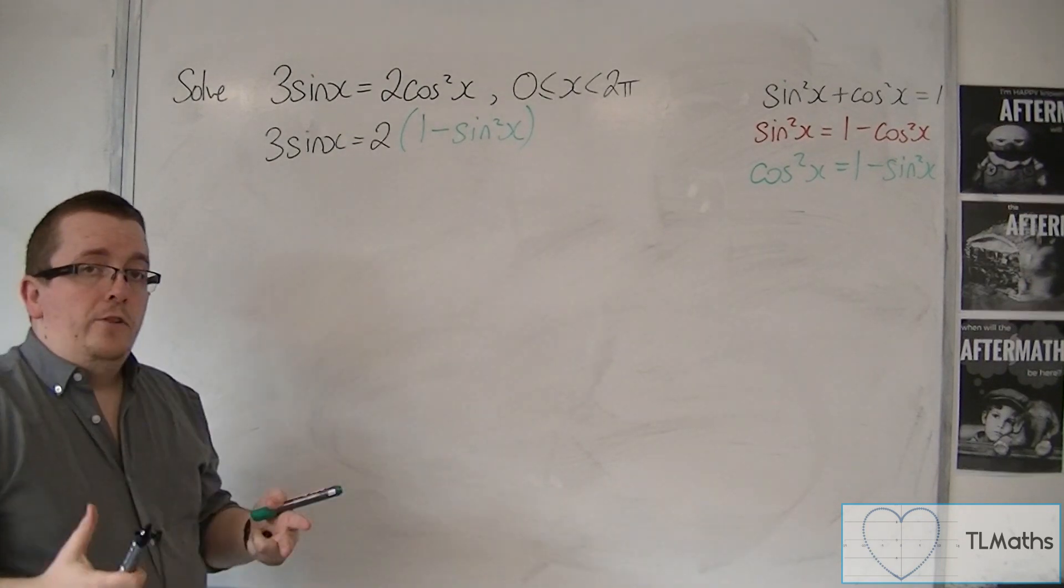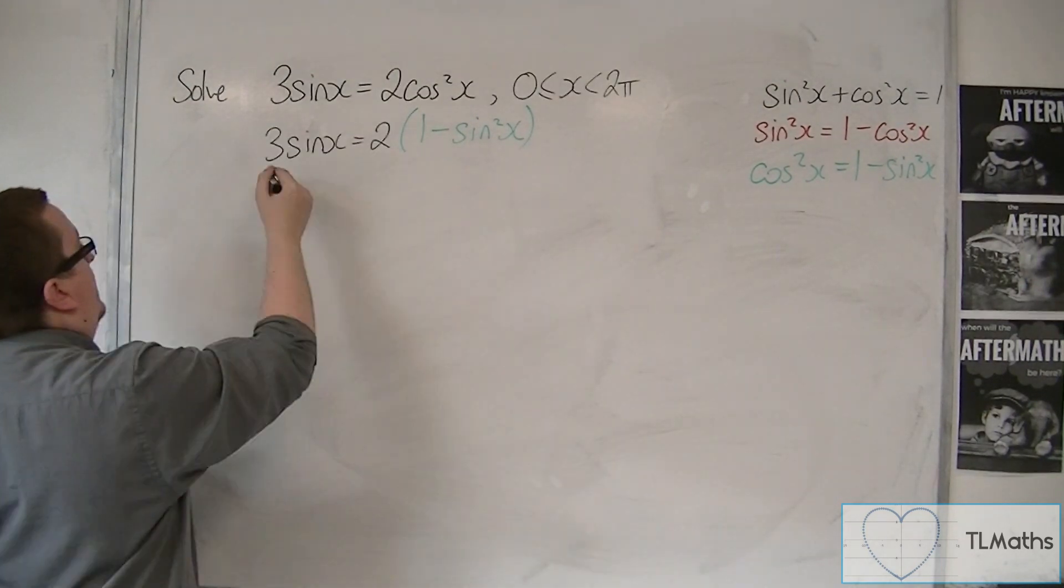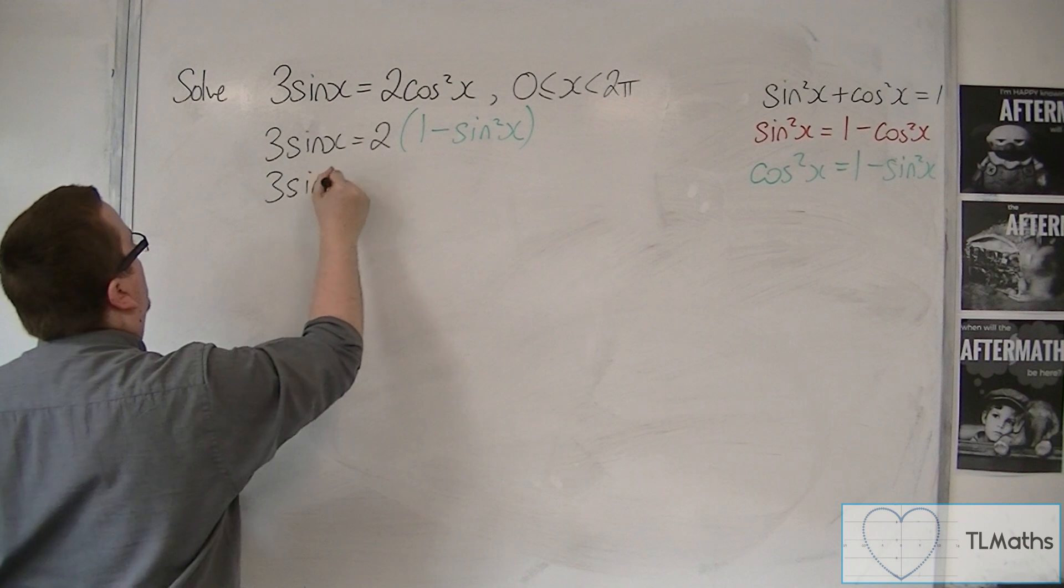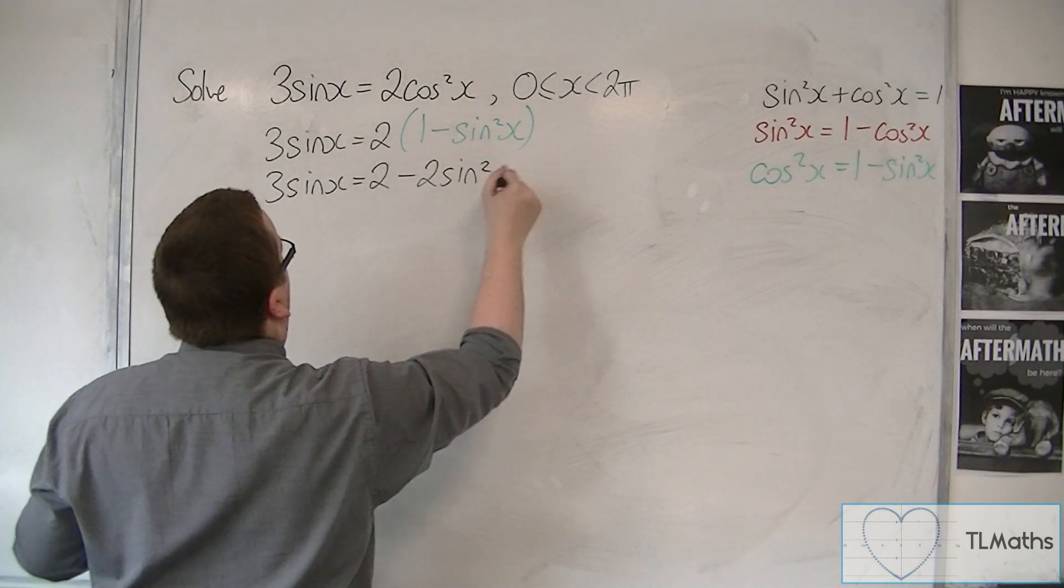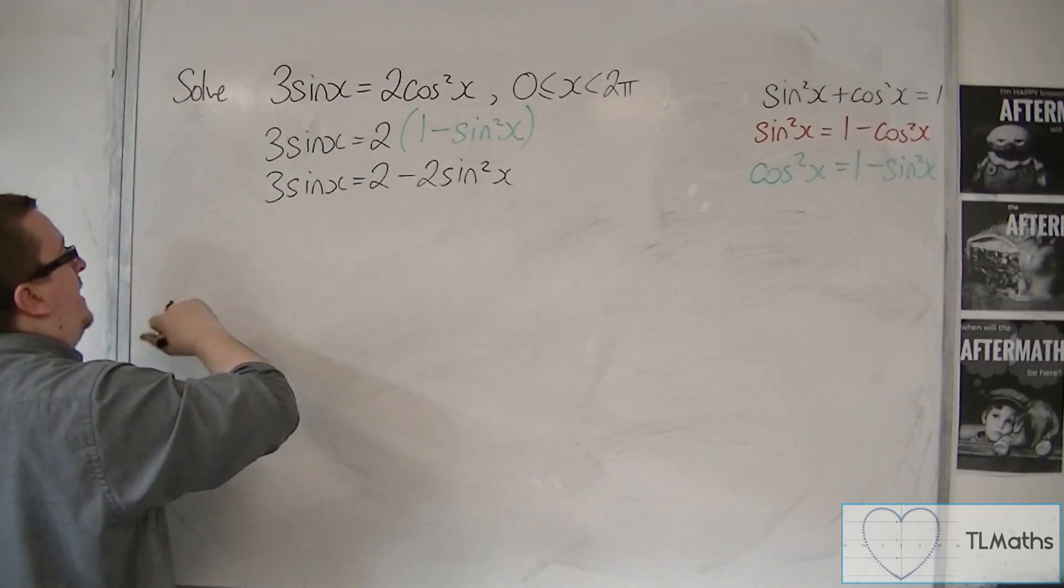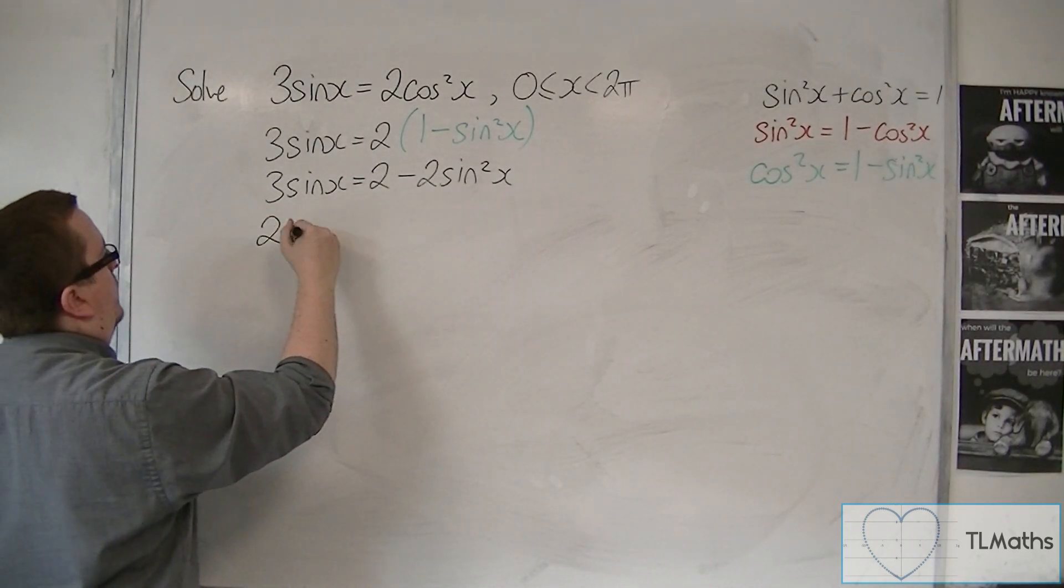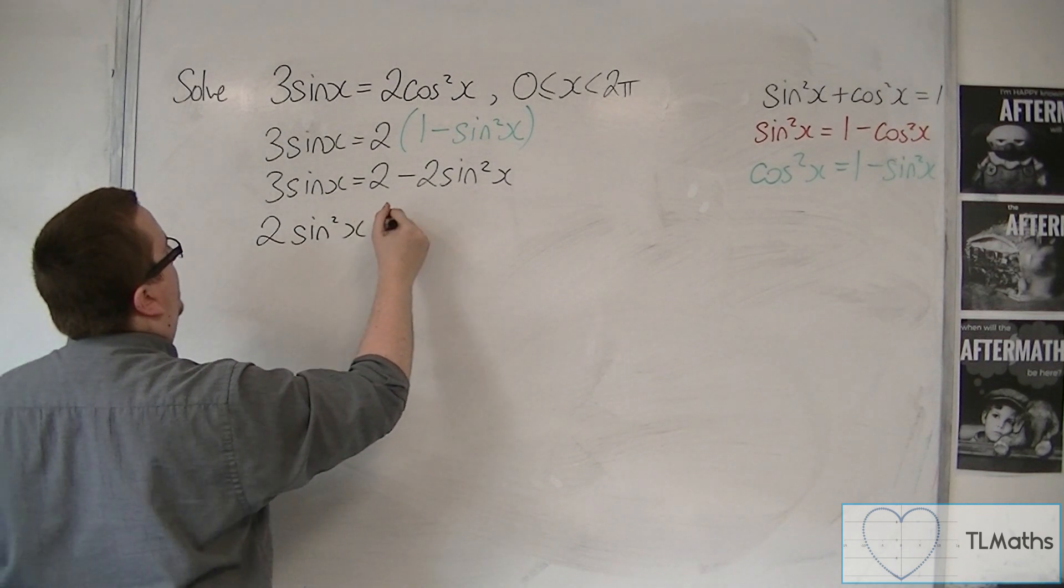So what I can do now is expand the bracket. Leave the left-hand side alone for the moment. And then I'm going to add everything onto the left-hand side to tidy this up to get it equal to 0.